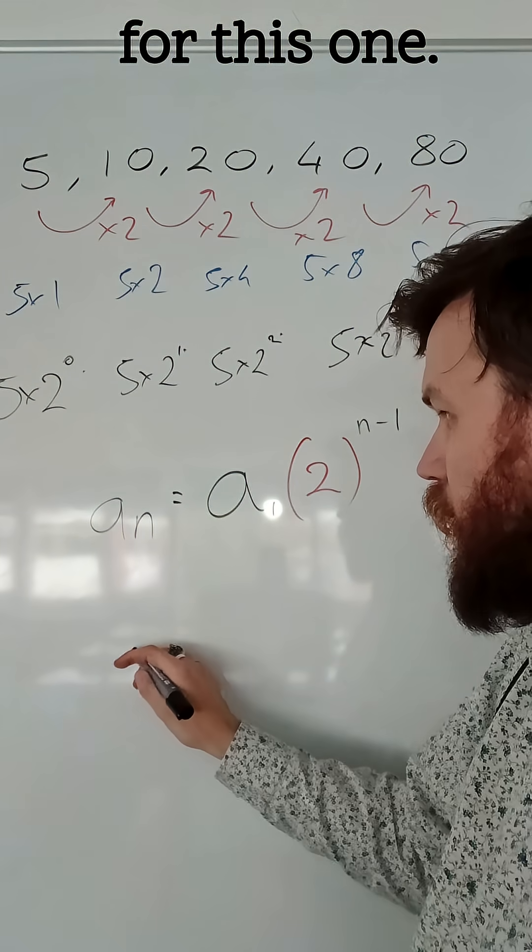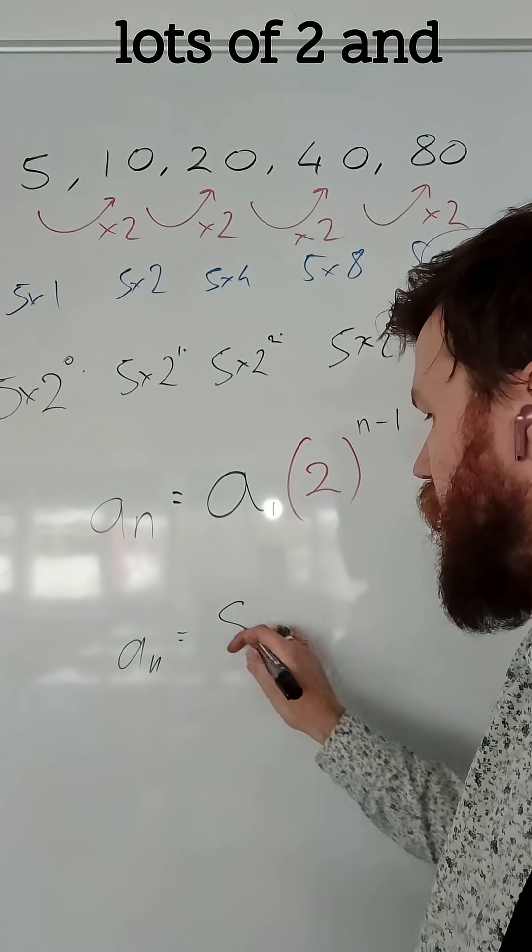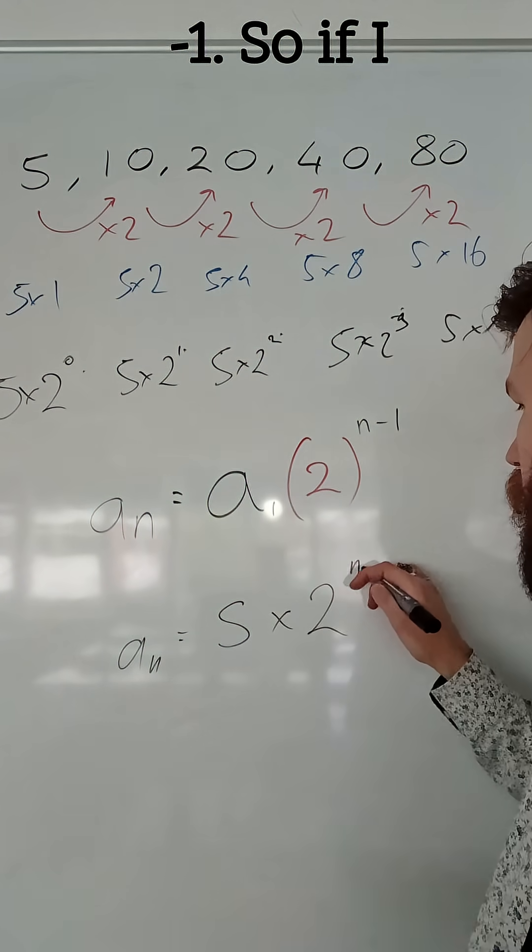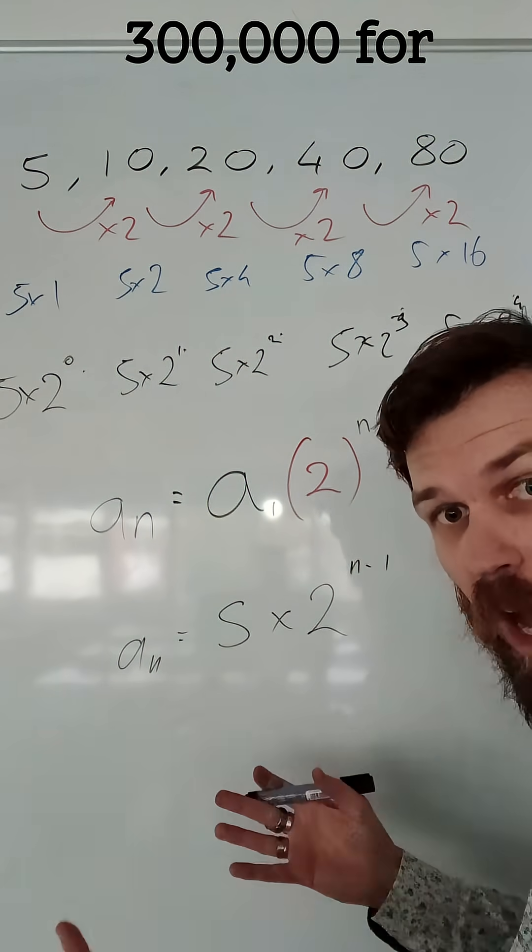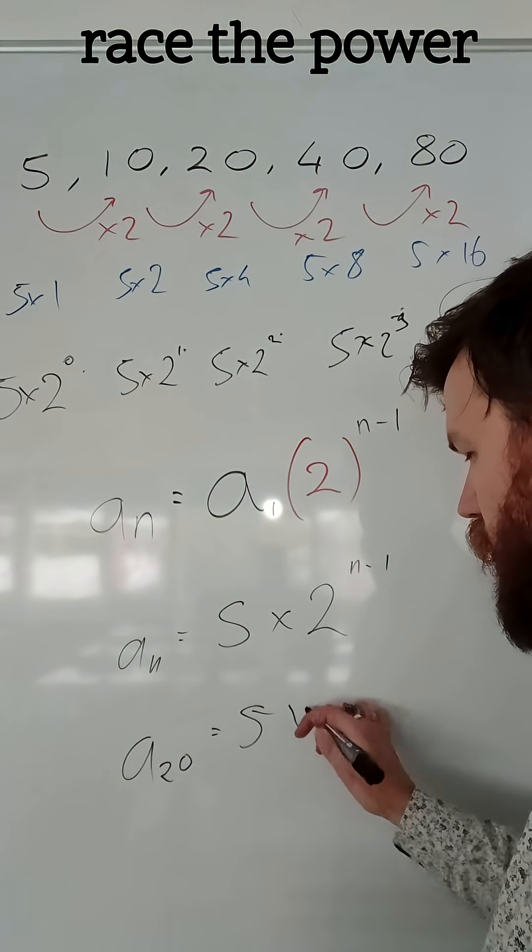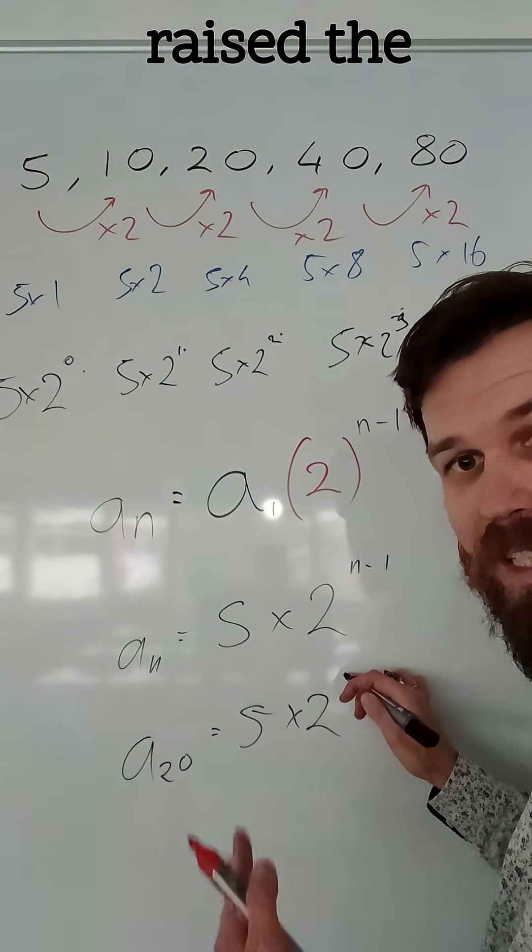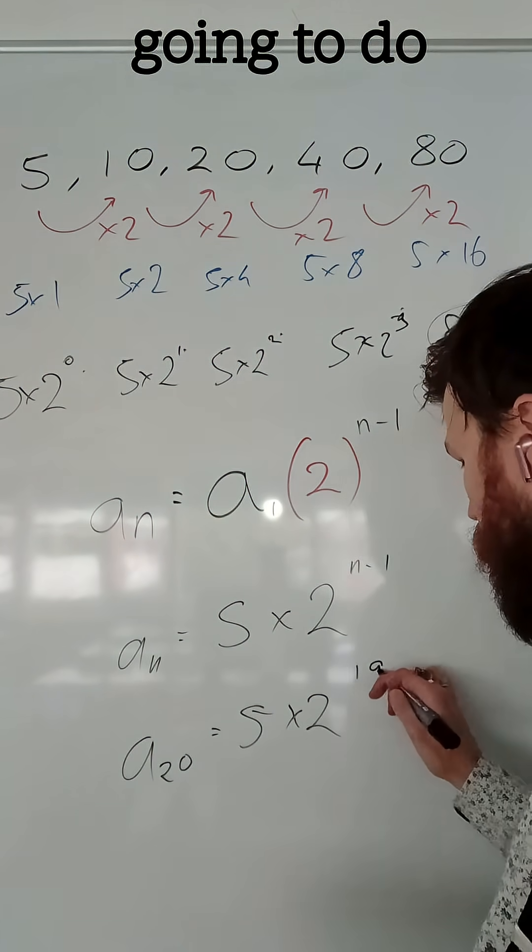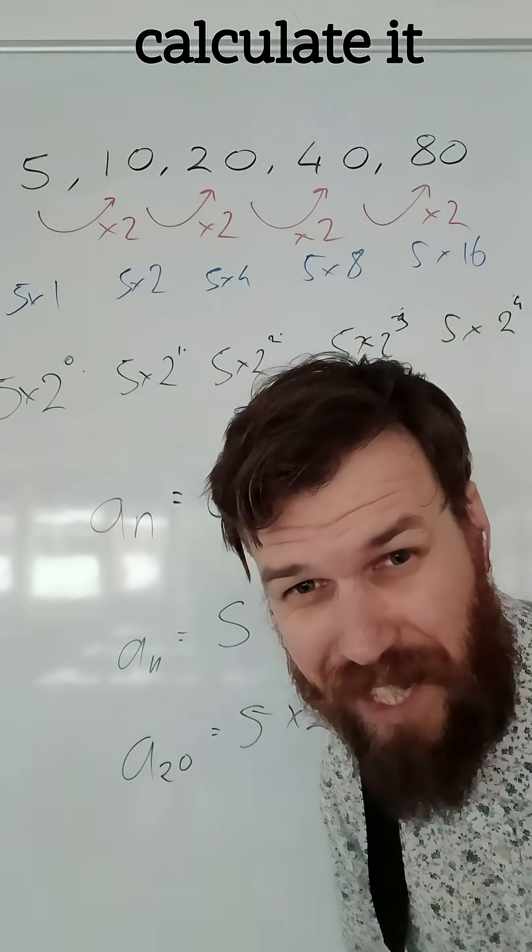So the actual term for this one would be 5 lots of 2 to the n minus 1. So if I was looking for the 300th, let's say the 20th term, the 20th term would be 5 times 2 raised to the power of 20 minus 1, raised to the power of 19. Now I'm not going to do that. That's what calculators are for.